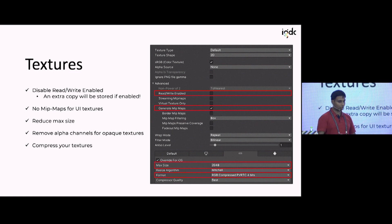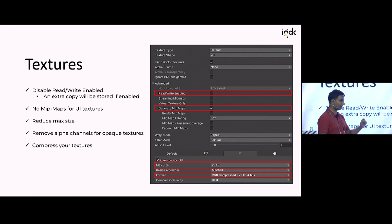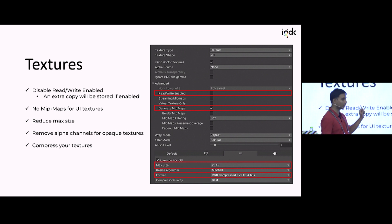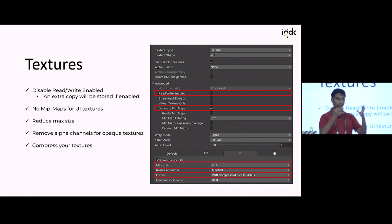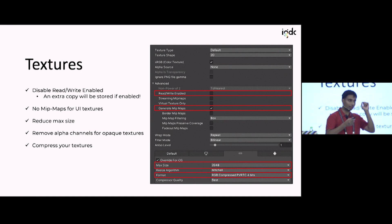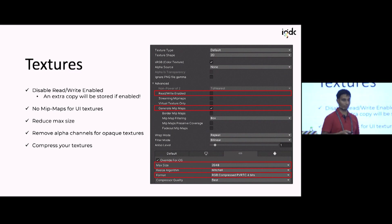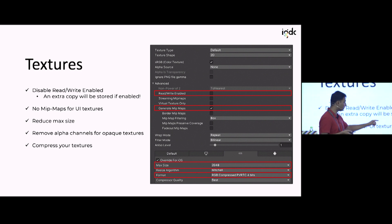Make sure Read/Write is disabled. You can even write an asset preprocessor script to check this flag and ensure it's always disabled. There are genuine cases where you need it — if you're scaling or downsampling an image from code — but otherwise just keep it disabled. Similarly with mipmaps: